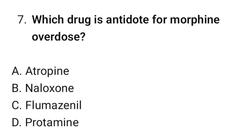Question number seven: Which drug is the antidote for morphine overdose? The correct option is B: Naloxone.